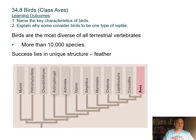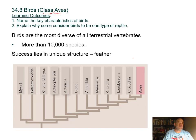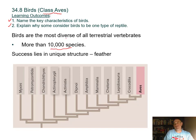Now we look at vertebrates called birds, class Aves. This is a traditional classification—birds are actually part of the reptile group, making reptiles paraphyletic if birds are excluded. Birds are the most diverse of all terrestrial vertebrates, with 10,000 species, and their success lies in the evolution of the feather. The cladogram shows that crocodiles and birds share a more recent common ancestor than crocodiles do with other reptiles.